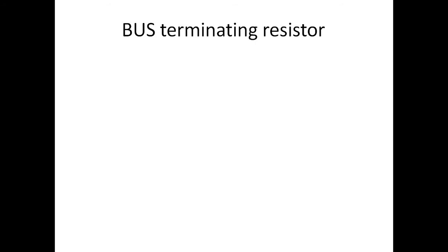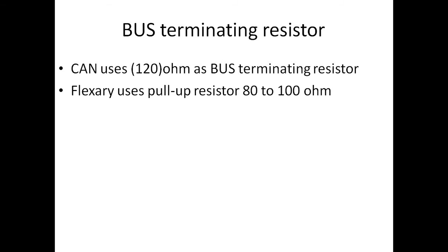Look at the bus terminating resistor. Why do we need bus terminating resistor? To avoid the signal reflections and to avoid the noise, we need a bus terminating resistor. So as per the standard, the CAN uses 120 ohm resistor to terminate the bus at both the ends. Even the FlexRay also uses a pull-up resistor about 80 to 100 ohm as a bus terminating resistor.